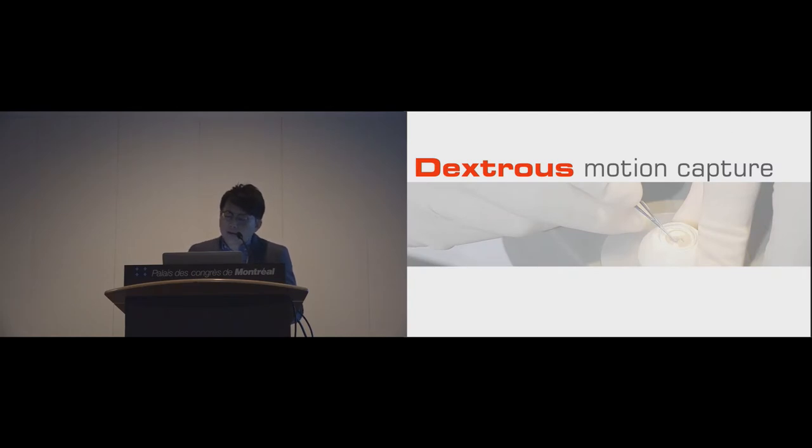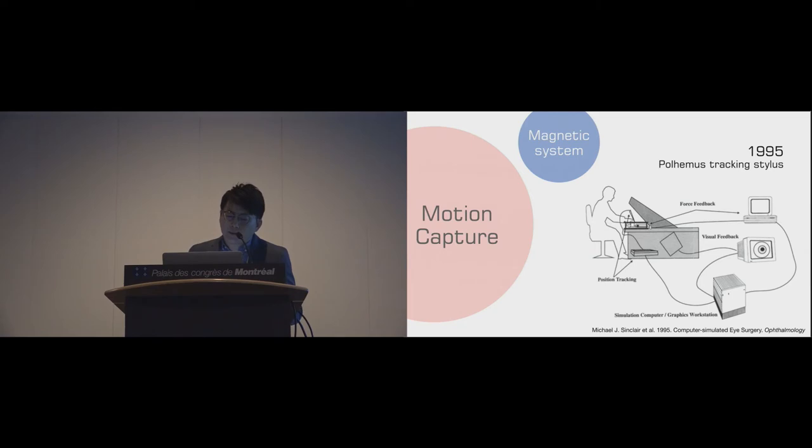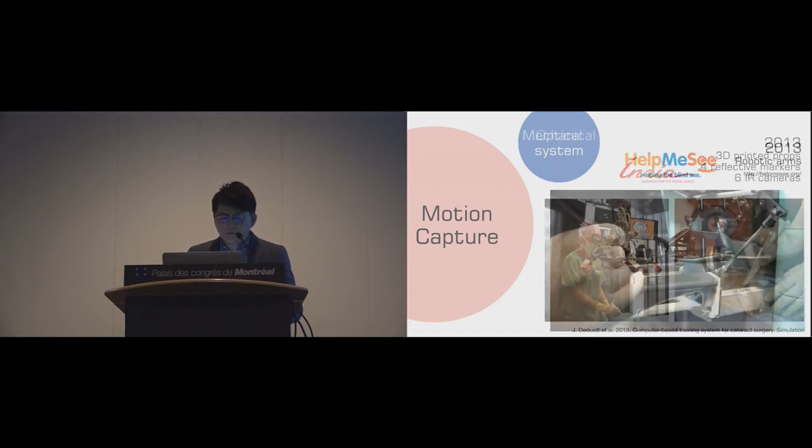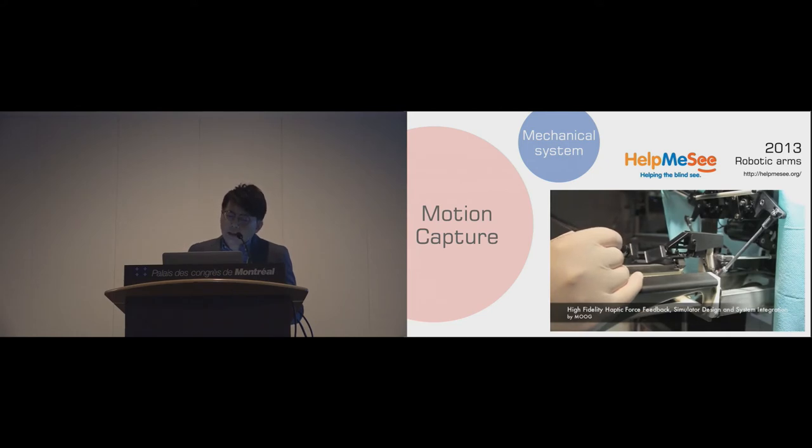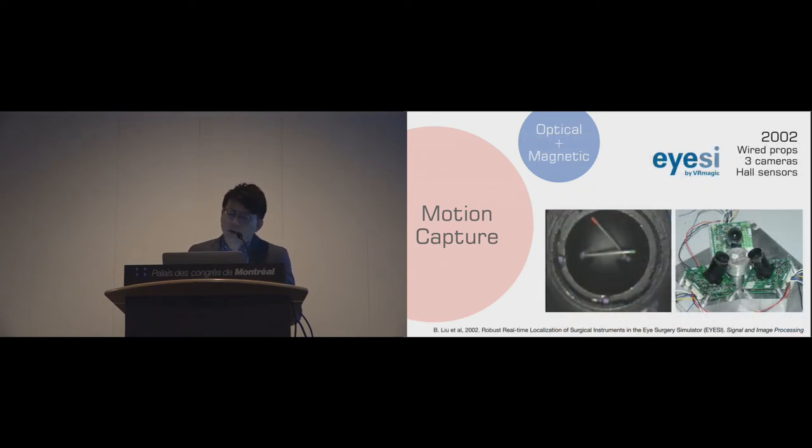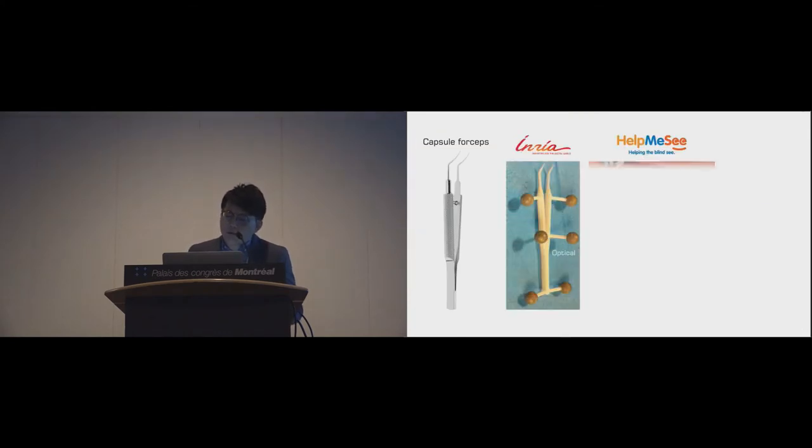To overcome these three challenges and to design an innovative training method, we need a dexterous motion capture system. In 1995, Sinclair et al. invented a computer-simulated eye surgery system, utilizing Polhemus tracking stylus as their input interface. In 2013, researchers from INRIA put four optical markers on 3D printed props and used six infrared cameras to calculate the positions. Help Me See is a global campaign to eliminate cataract blindness in developing countries. They designed a simulator with small robotic arm as the input interface to train cataract surgeons. EyeSi is the only available product in the market now. They put three cameras under the controller tips and combined with Hall sensors to detect the positions.